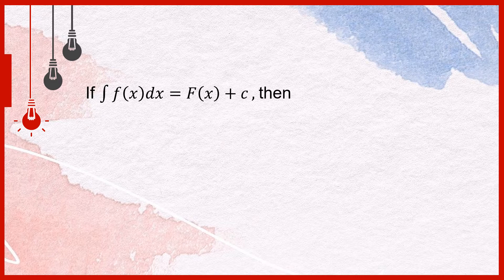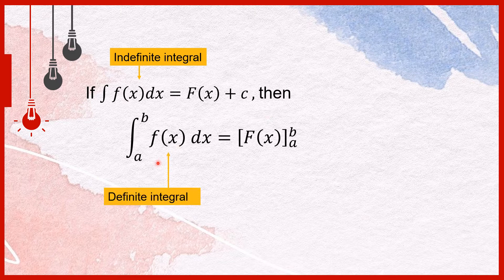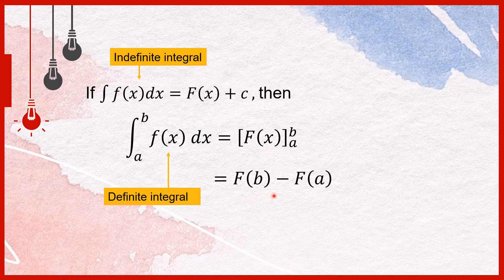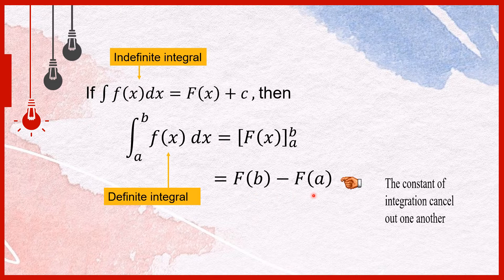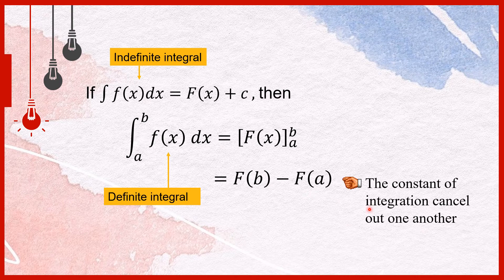If the definite integral of the function f of x is big F of x plus c, then the definite integral of f of x from x equal a to x equal b is obtained by substituting the value of the upper limit x equal b and the lower limit x equal a into big F of x. Thus, the value of the definite integral is big F(b) minus big F(a). The constant of integration c cancels out, so it is called a definite integral since the integral gives a definite value.